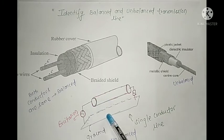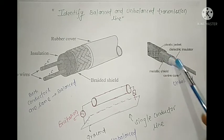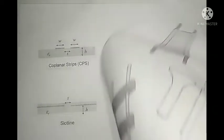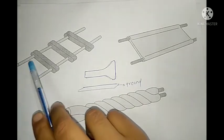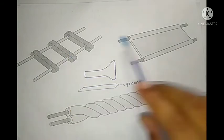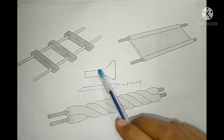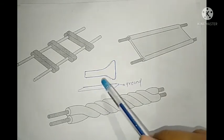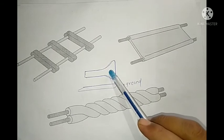For a transmission line where the cross-sectional area of the top conductor and the bottom conductor are entirely different, it will be an example of an unbalanced transmission line. Similarly, for a coaxial cable where the central conductor and outer conductor have different cross-sectional areas, the answer will be unbalanced. For the remaining examples where the cross-sectional area of both conductors is the same along the length, those are examples of balanced transmission lines. If the cross-sectional area is changing or the ground plane and top conductor are entirely different, that is an unbalanced transmission line.